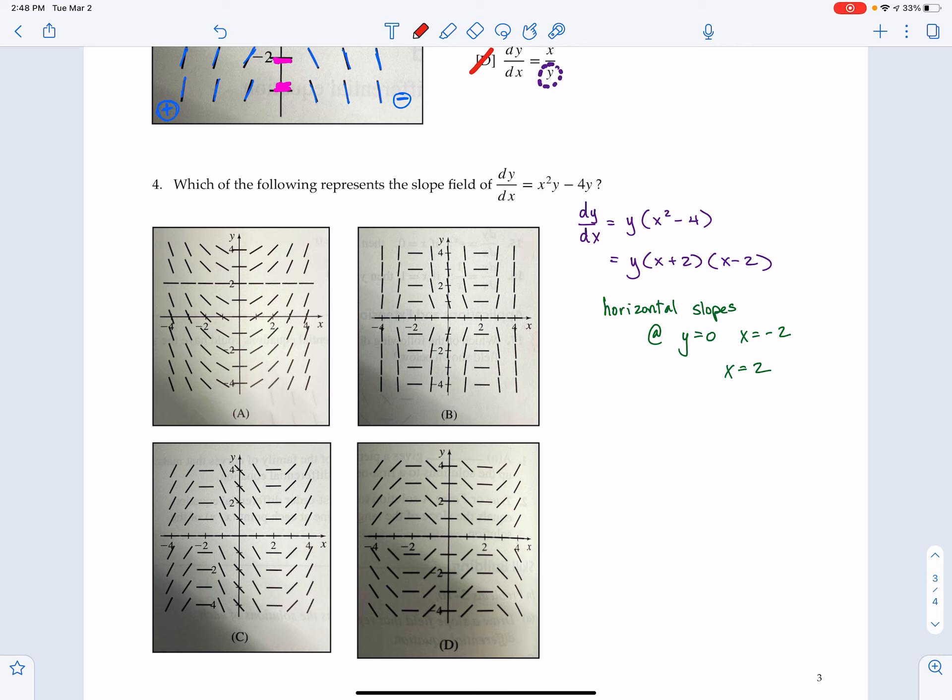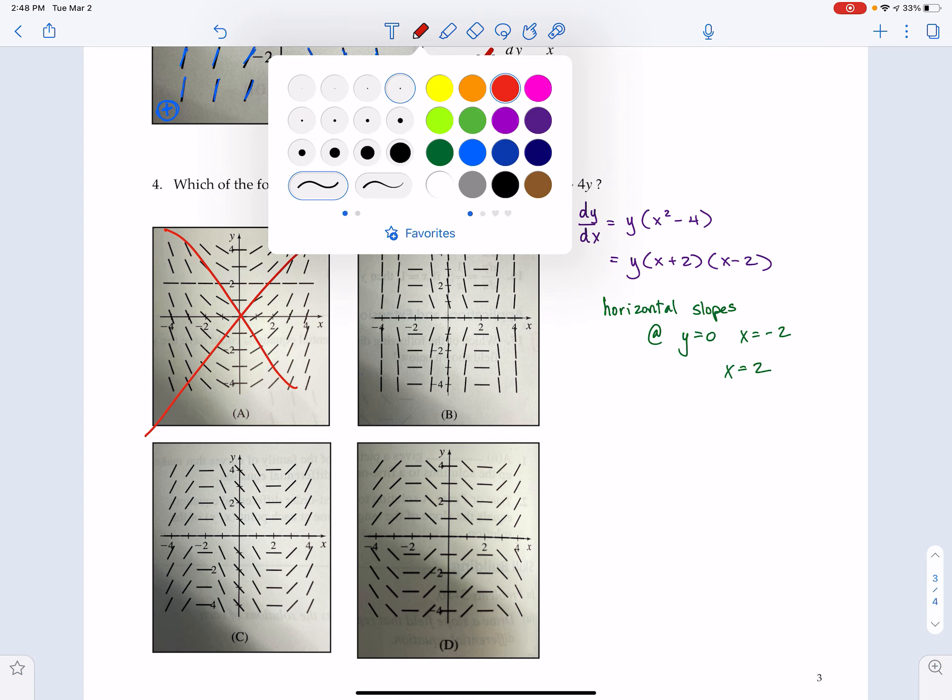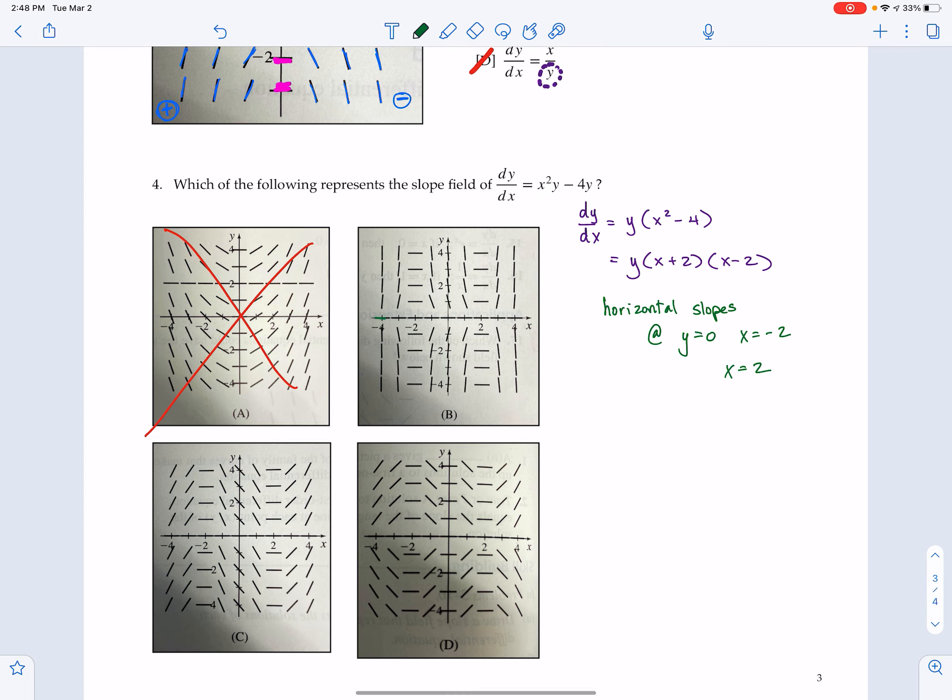Letter A only has zero slopes at x equals zero and y equals two. So this is no good. Letter B has horizontal slopes at y equals zero, and horizontal slopes at x equals negative two, and x equals positive two. Now, I'm not saying that this is the correct answer, but it definitely passes the criteria for our first pass. And it looks like, unfortunately for us, that letter C and letter D have the same setup. So what else could we do to eliminate some of these options?